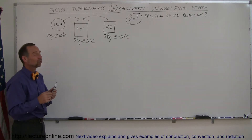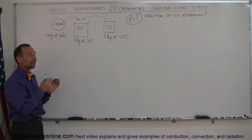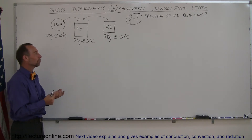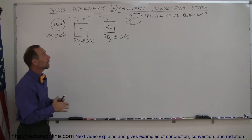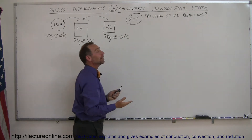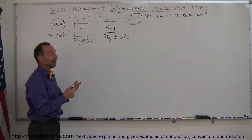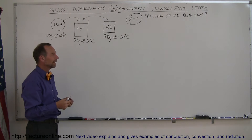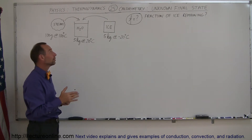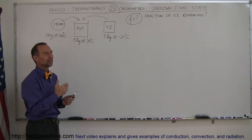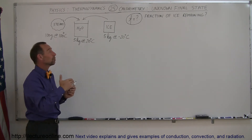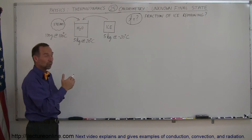I'm assuming that in the end we're going to have an ice-water mixture, so part of the ice will have been melted but not all of it. The question is: what is the fraction of the ice remaining of the original amount? How much of the 5 kilograms of ice will be left? That's our assumption — though it could be wrong. It could be that none of the ice melted, although that's very unlikely.